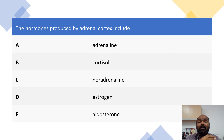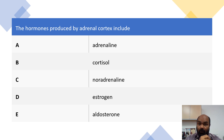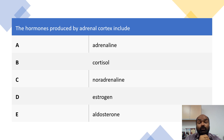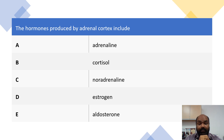So let's see the answers together. A: adrenaline is false, because it's produced in the adrenal medulla. B: cortisol is true, produced by zona fasciculata. C: noradrenaline is false, produced by the adrenal medulla. D: estrogen is true — via DHEA, which is produced by the zona reticularis. E: aldosterone is true, produced by the zona glomerulosa, the outermost layer of the adrenal cortex. So the answers are: false, true, false, true, and true.